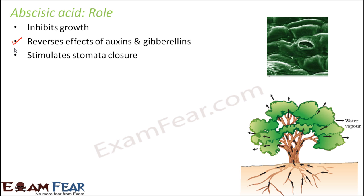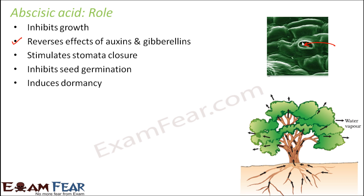If the stomata gets closed, we know how important stomata are — it is through the openings of the stomata that exchange of gases takes place. Without this exchange of gases, the processes of photosynthesis and respiration will not take place inside the plant cells. So if stomata is closed, this exchange stops and all activities inside the plant body stop, and growth obviously stops. ABA also inhibits seed germination and induces dormancy, making seeds inactive for quite some time.